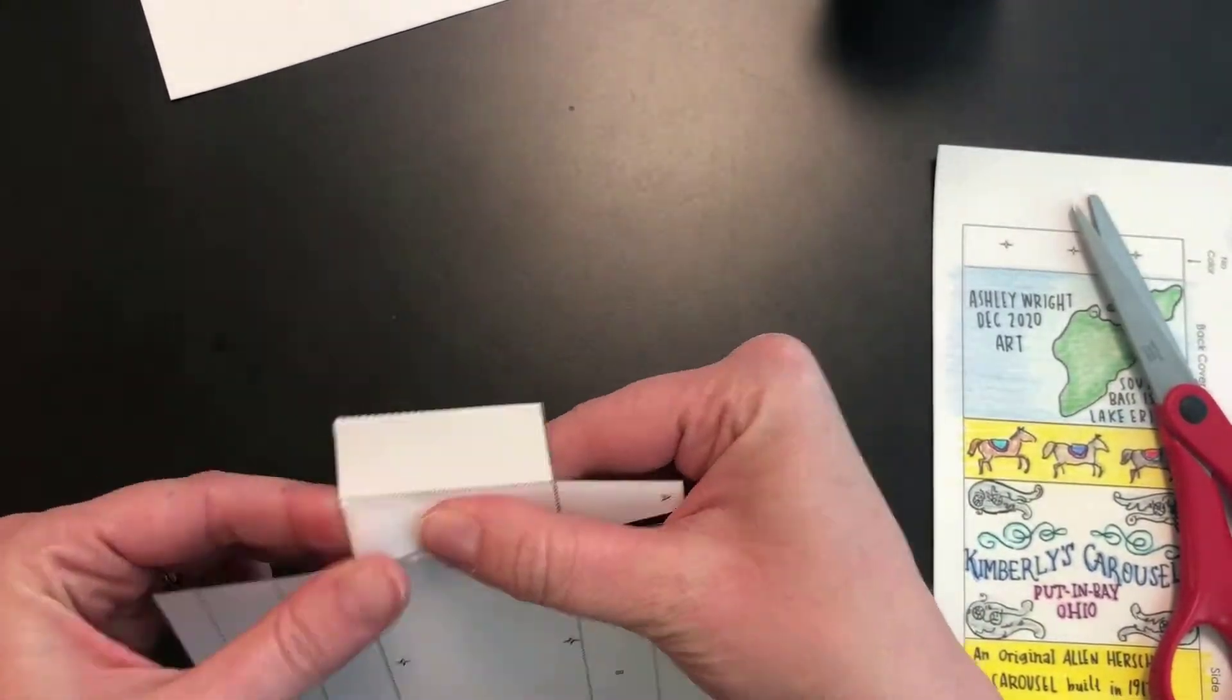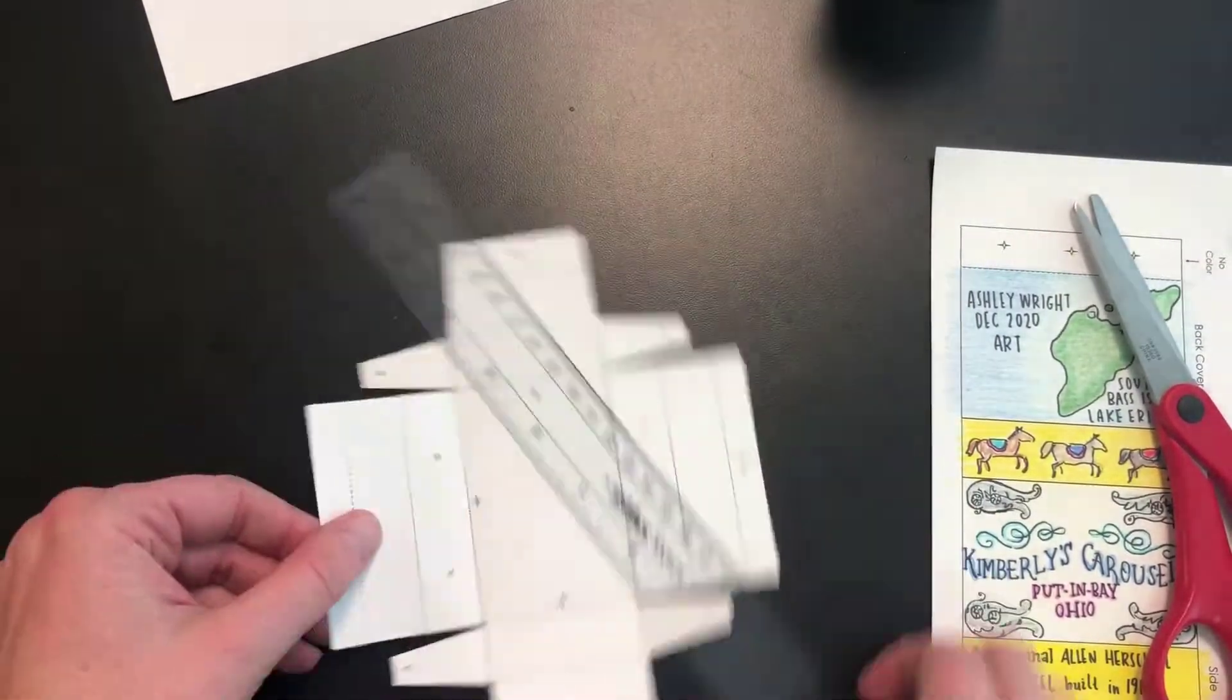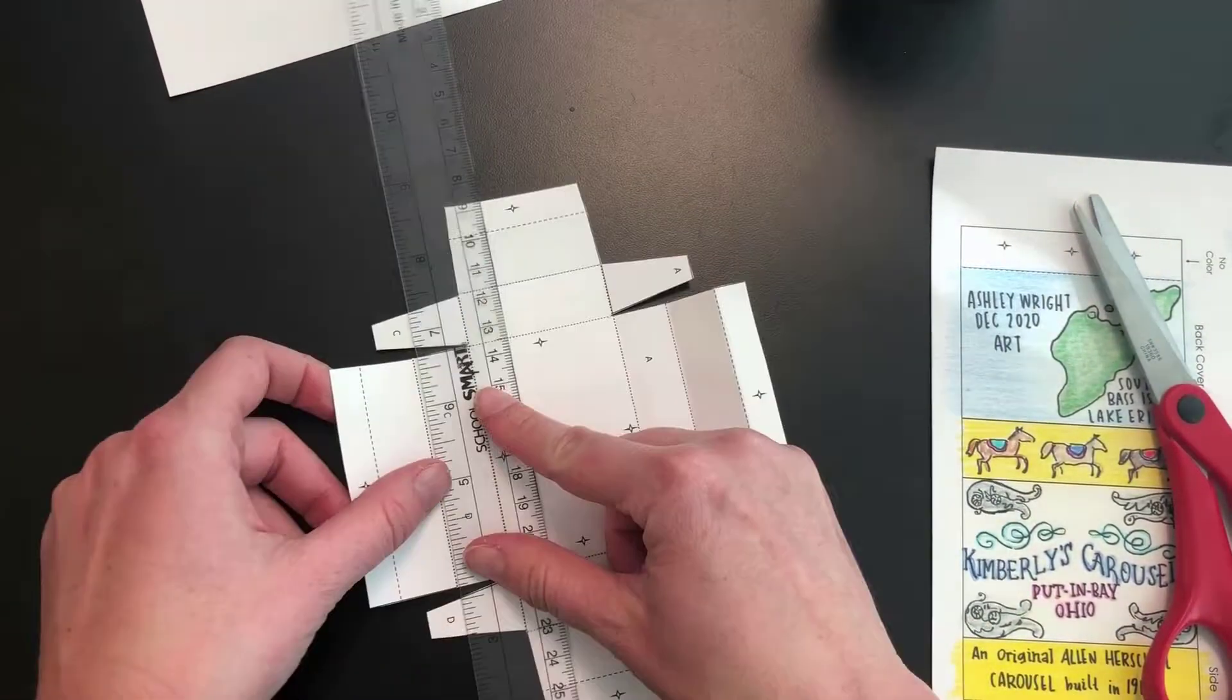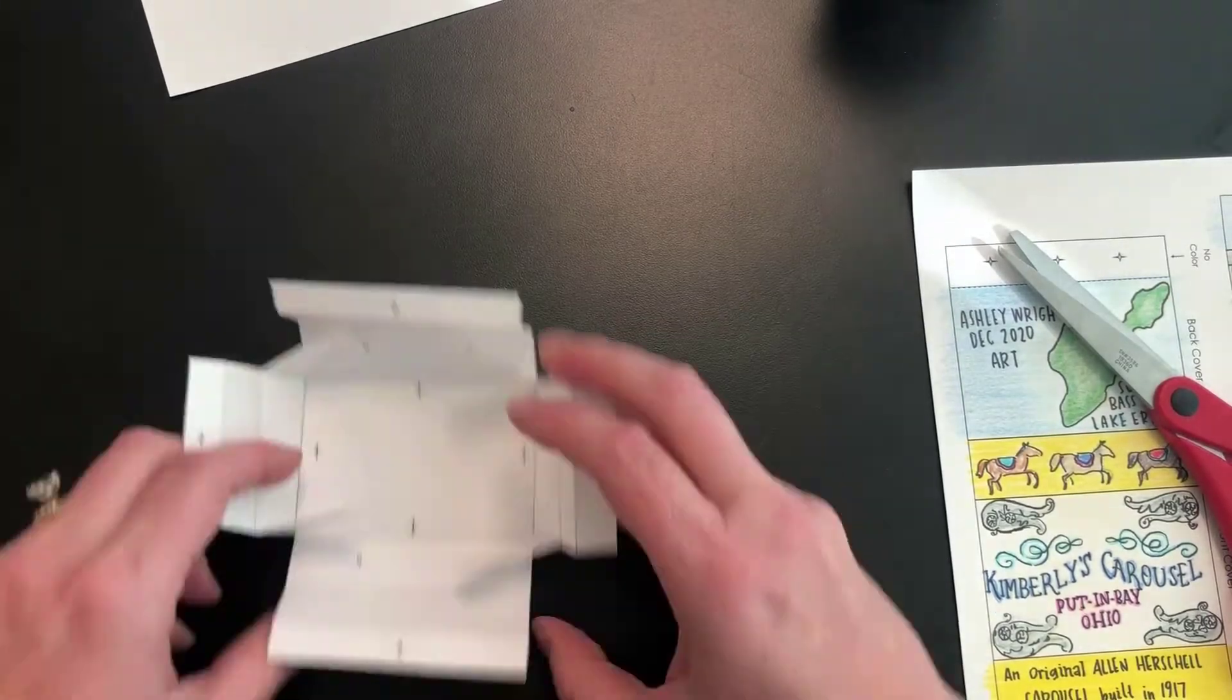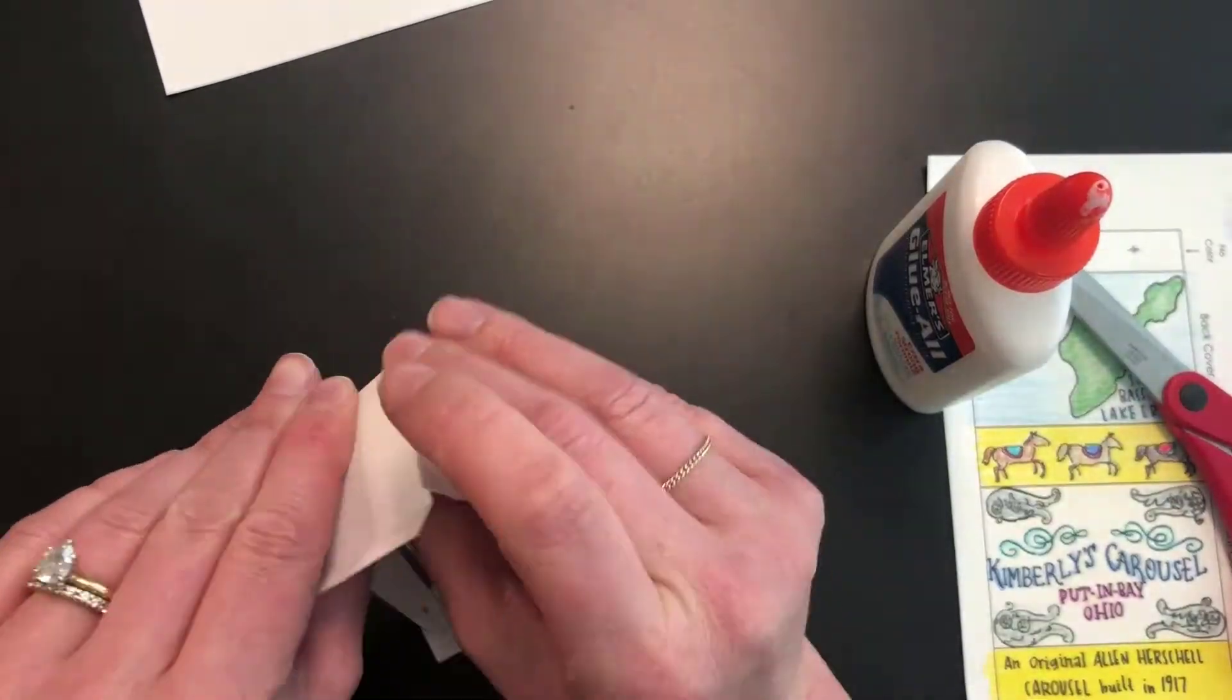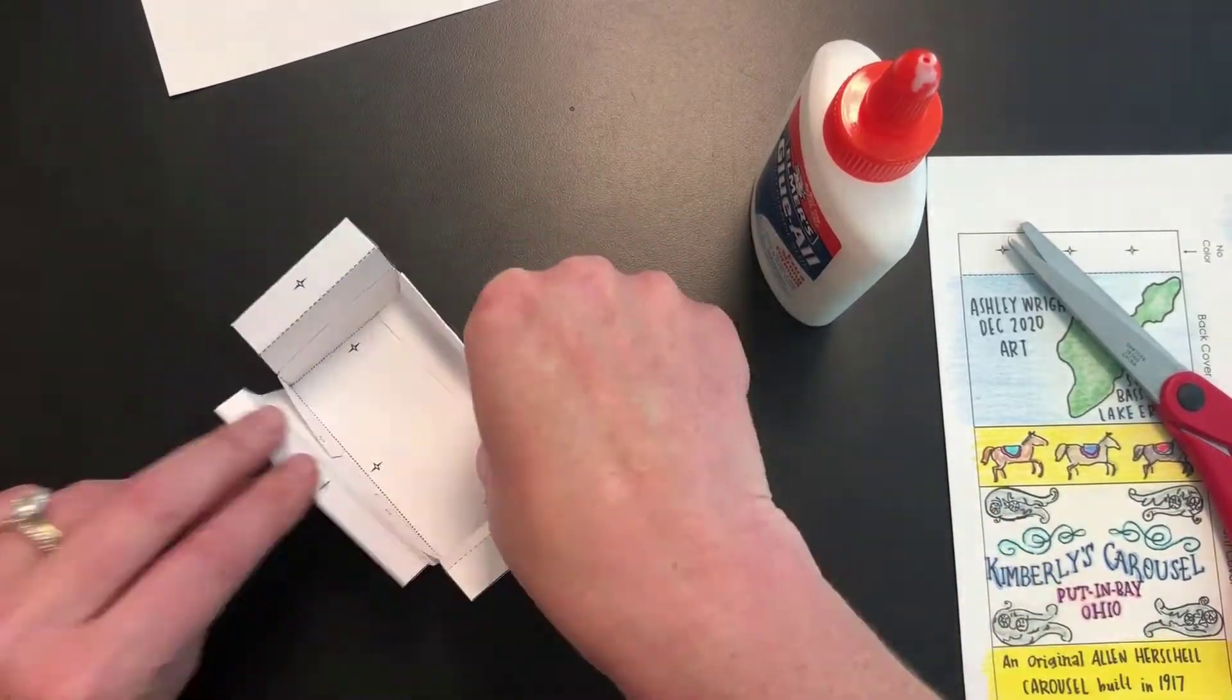Once it is done being cut, I'm ready to start folding. The dashed and dotted lines represent whether a tab is folding up or down. I'm going to be using my ruler or an ID, something to help me create nice crisp folds. You will see more detailed instructions on how to assemble this box.